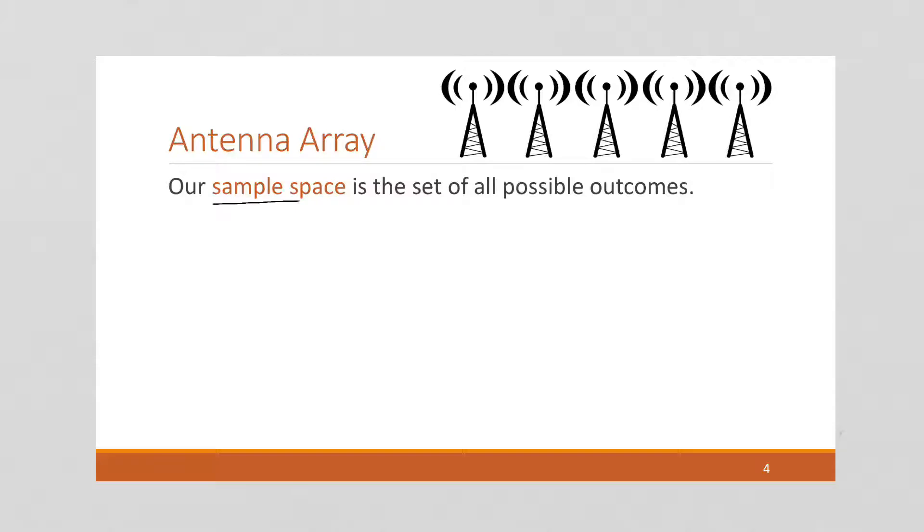So first, an important term is sample space. The sample space is a set of all possible outcomes. So I'm going to draw that out now, and I'm going to use ones for a working antenna and zeros for a broken antenna. So if we start with the first one broken, and the other's all working, we know exactly one is broken. So if we start with the second one, or it could be the second one, or it could be the third one, and so on, all the way to it being the last one. All right, so this is called our sample space.